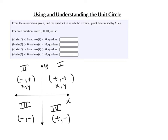Where is sine less than 0 — meaning sine is negative — and cosine also negative? Remember sine is y over r, and r is always positive, so we really just care about y. And cosine is x over r, so we care about x. I'm looking for a quadrant where both y and x are negative. That would be quadrant 3.